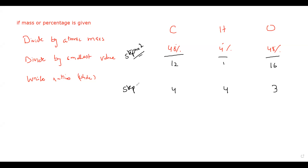Step two: divide by the smallest value. The smallest value in this example is 3, so we divide all of them by 3. So 4 divided by 3 gives 1.33; 4 divided by 3 gives 1.33; and 3 divided by 3 is 1.